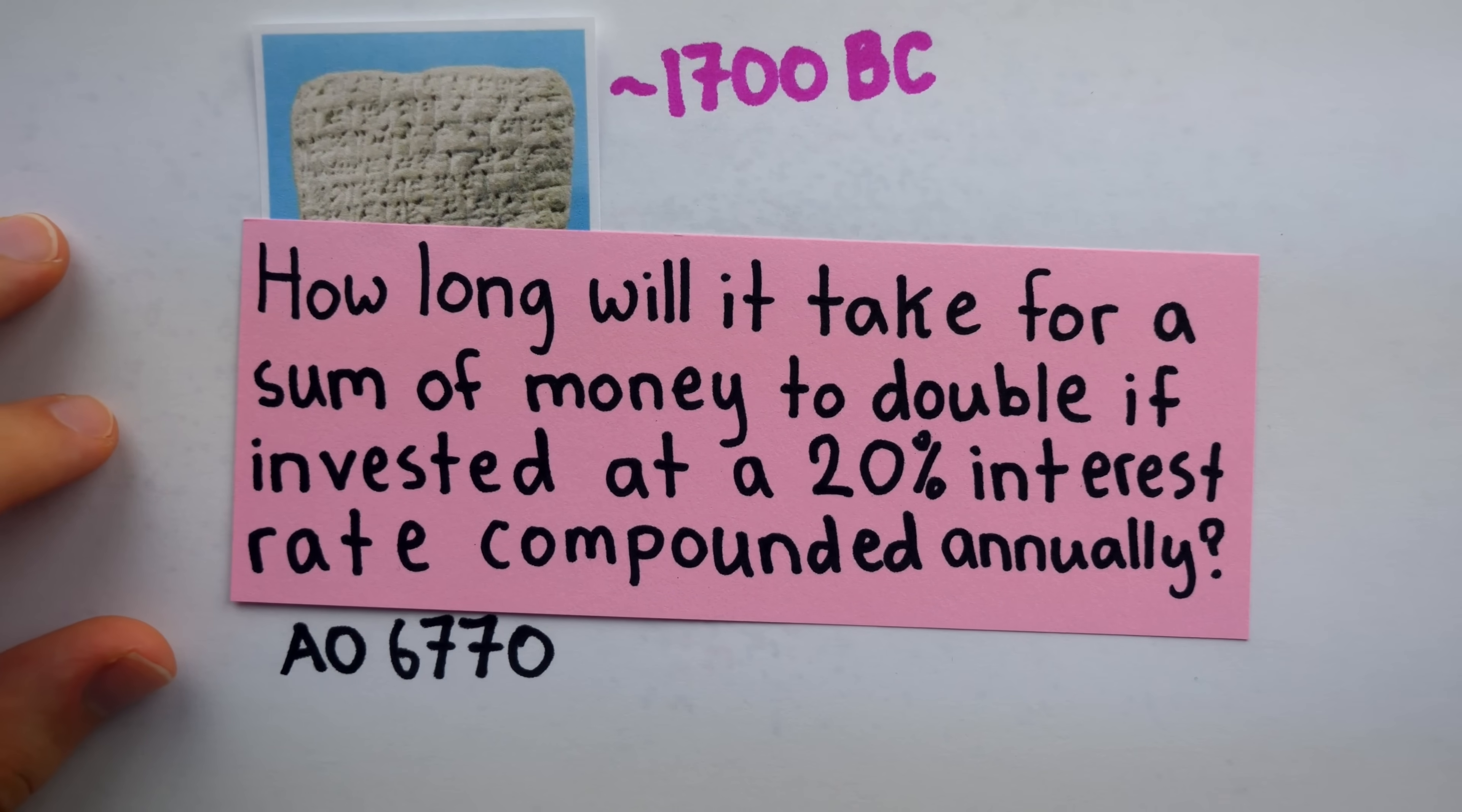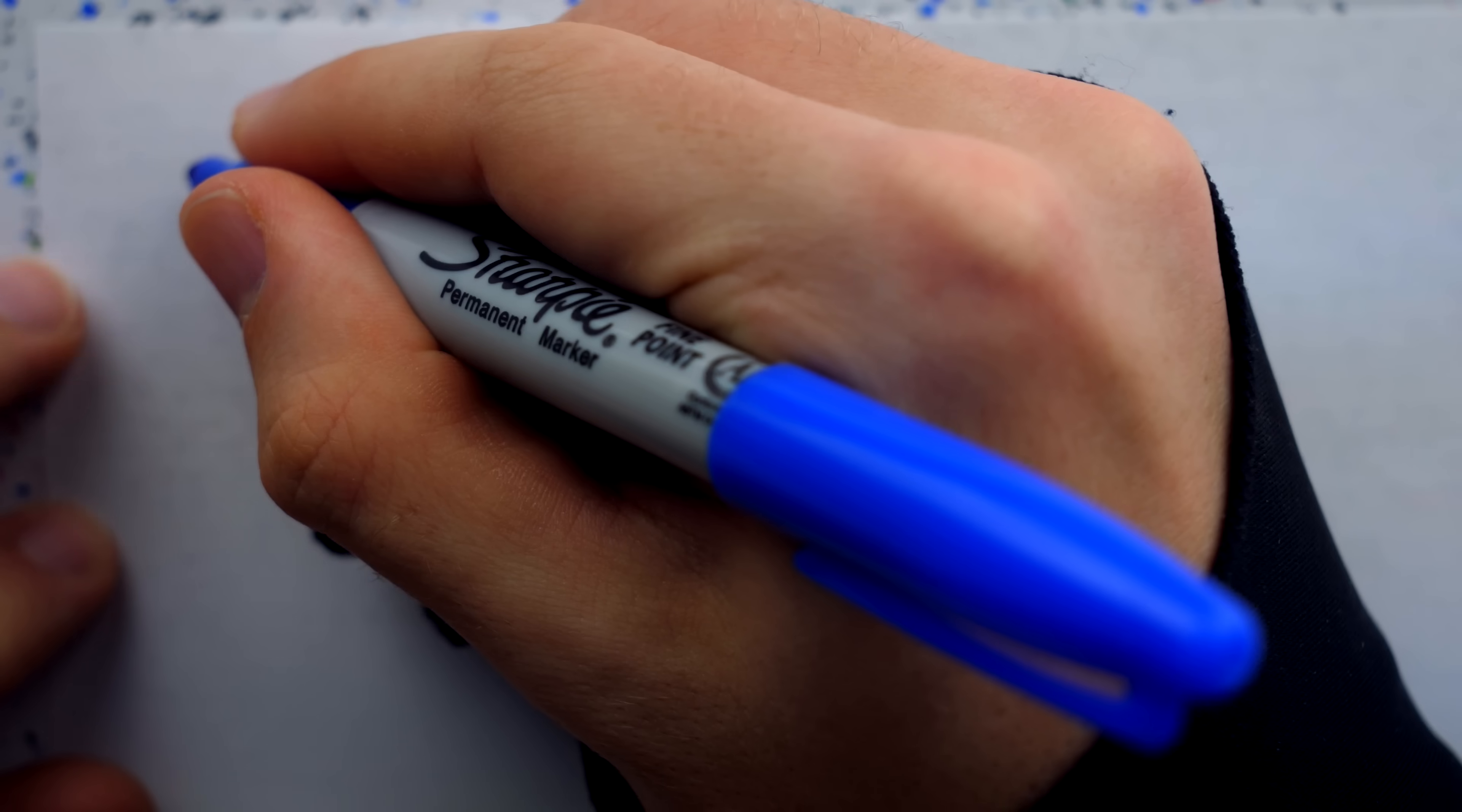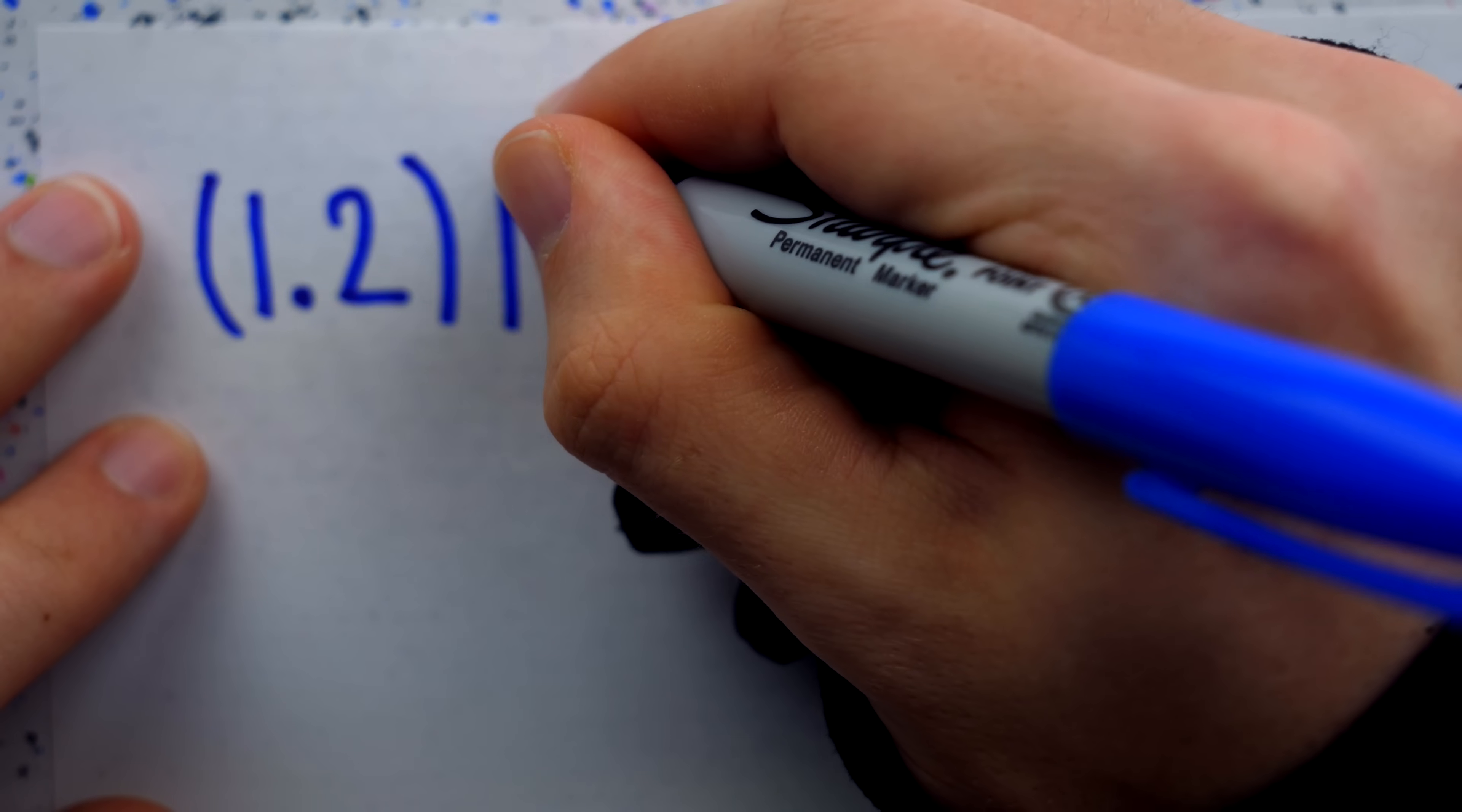Alright, getting down to the mathematics, this problem is quite trivial to solve with modern methods. A sum of money p, earning 20% interest compounded annually, will be worth 1.2 times p after one year.